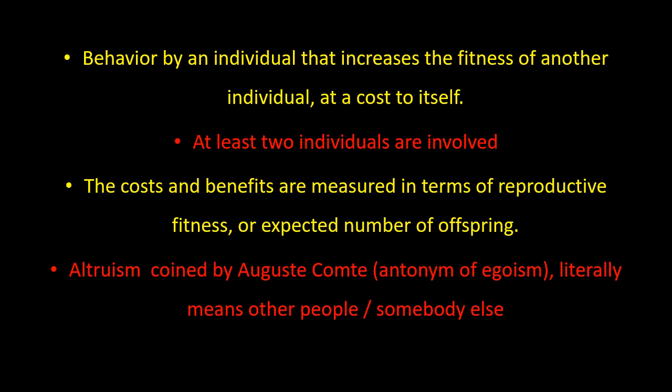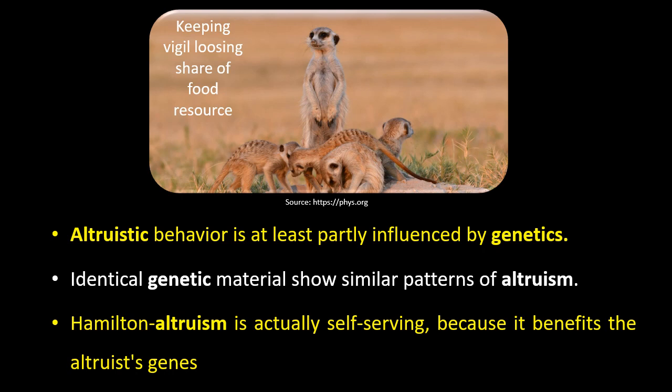The term Altruism was coined by Comte and is an antonym of egoism, literally meaning other people or somebody else. Altruistic behavior is partly influenced by genetics. Identical genetic material shows a similar pattern of Altruism. If we look into different societies where Altruism is prevalent, the pattern and phenomenon of Altruism is almost similar.